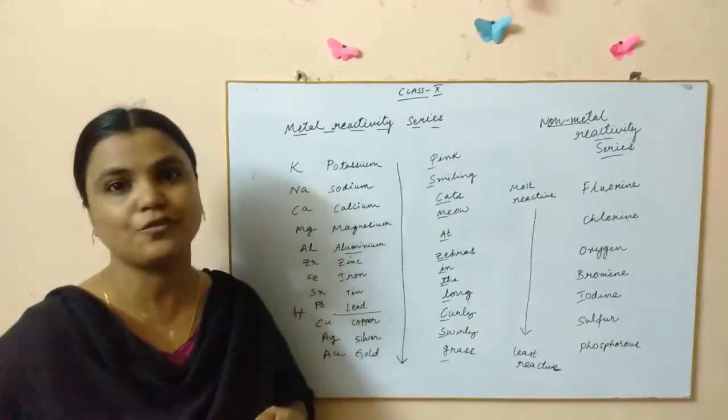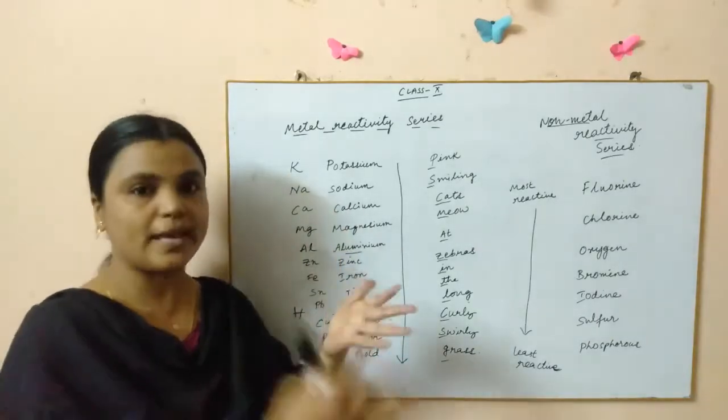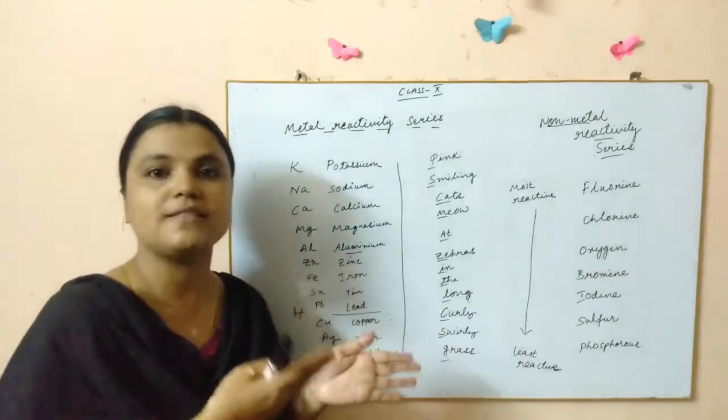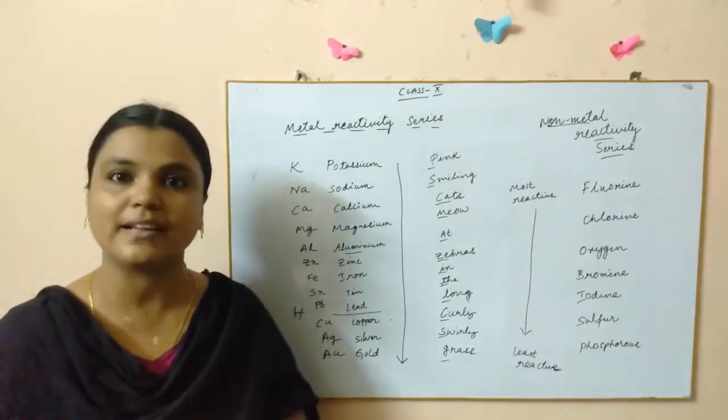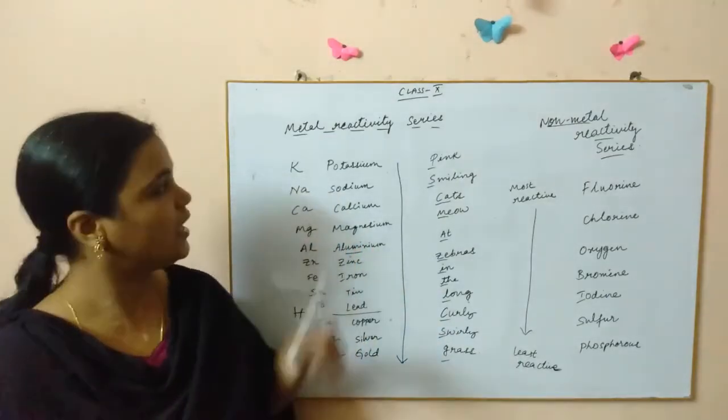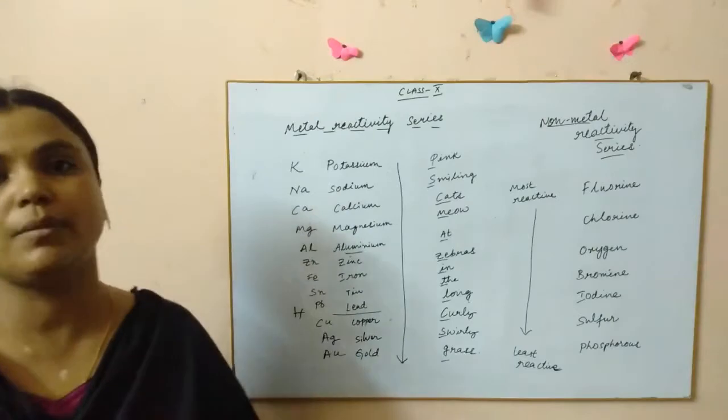We have seen them in the displacement reaction, chemical displacement reaction. These metals they react with salt solutions and form different products. They displace the lesser reactive element from its compound and occupy its place forming a new compound. That is metal displacement reactions children, you have to remember all this.